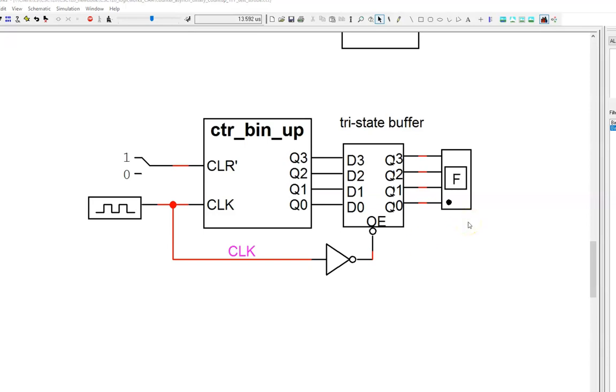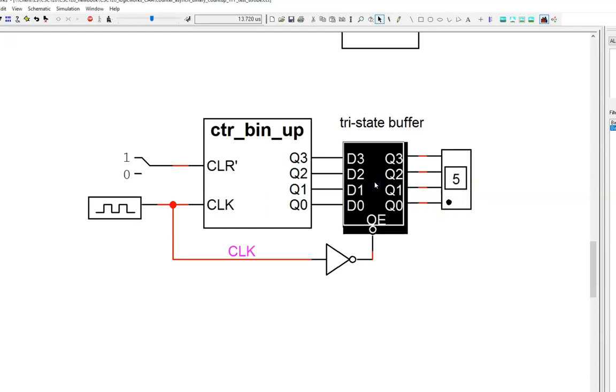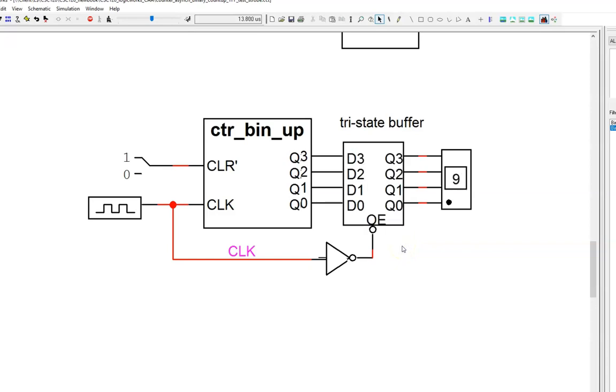But, there are x's in between each count. These x's are the result of this tri-state buffer and represent high impedance states. If you recall from an earlier lesson, high impedance means that there is no electrical signal on this wire, neither a 0 nor a 1.